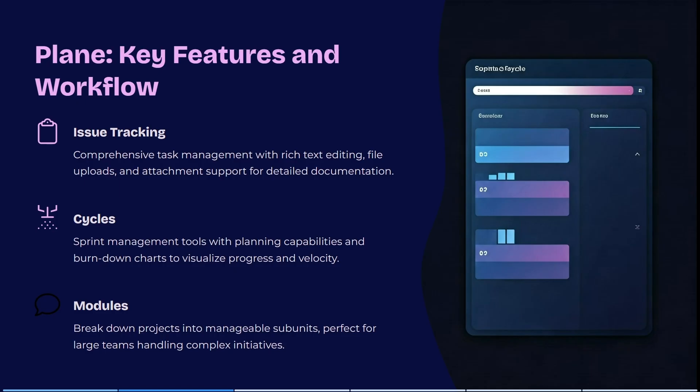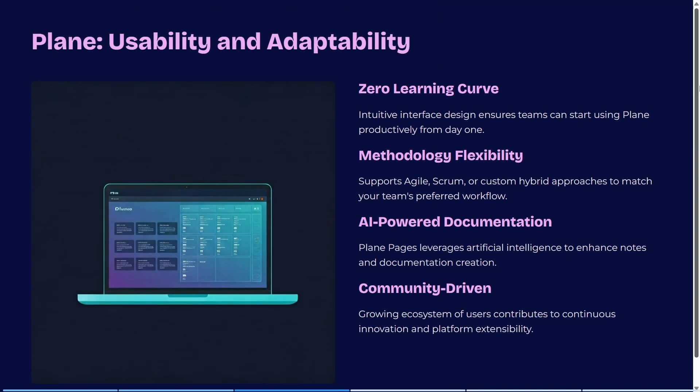Let's have a look at some of the key features and their workflows. Issue tracking is massive — it has comprehensive task management with rich text editing, file uploads, and attachment support for detailed documentation. You can use sprint management tools with planning capabilities and burndown charts to visualize progress and velocity, and you can break down projects into manageable subunits, which is perfect for large teams handling complex initiatives. It also has a zero learning curve, so its intuitive interface ensures teams can start using Plane productively from day one.